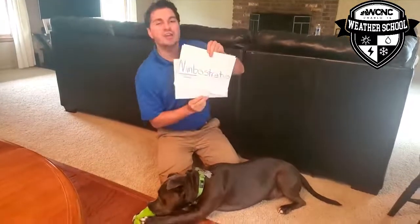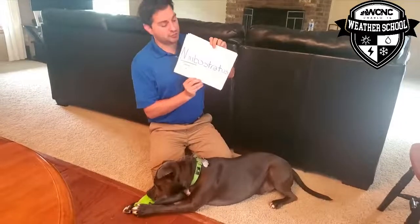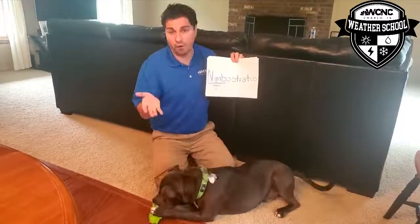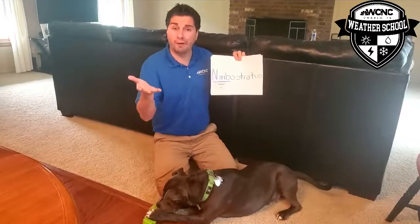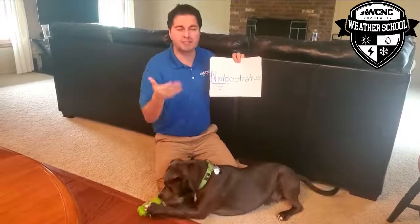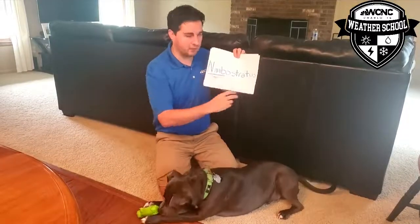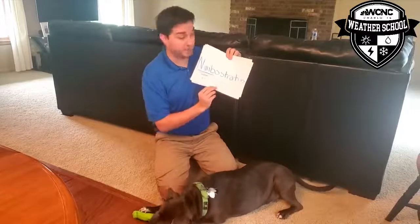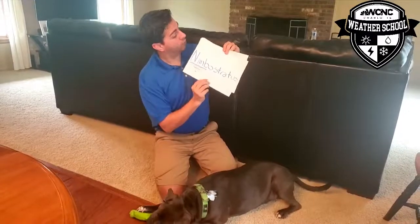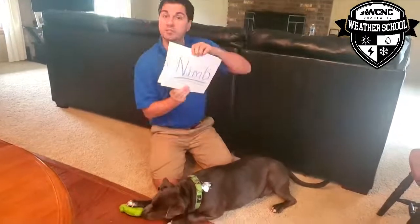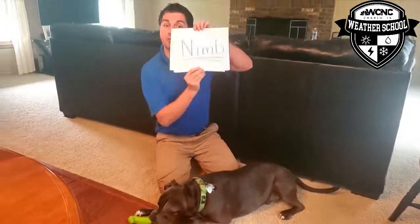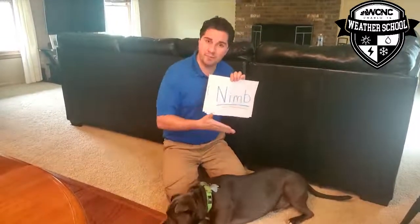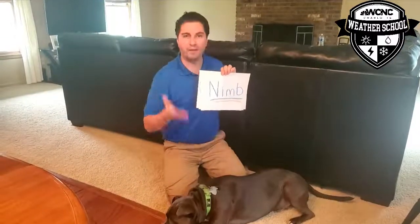Number two: nimbostratus. This is a general rain cloud that produces light to moderate rain. A moderate rain is just less than heavy rain. There's no thunder and lightning that usually goes along with these. But both these words have something in common — the word "nimb," which simply means rain.